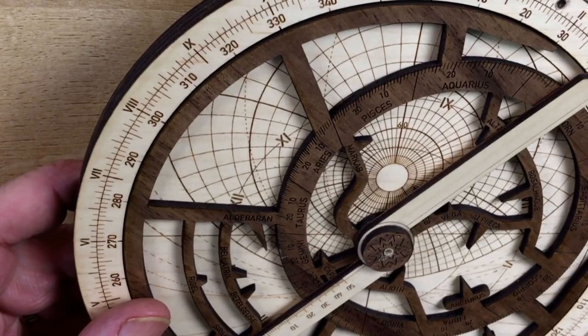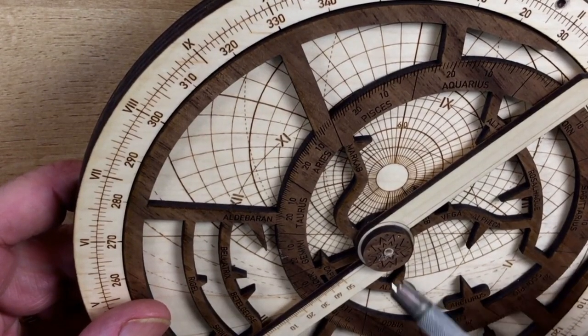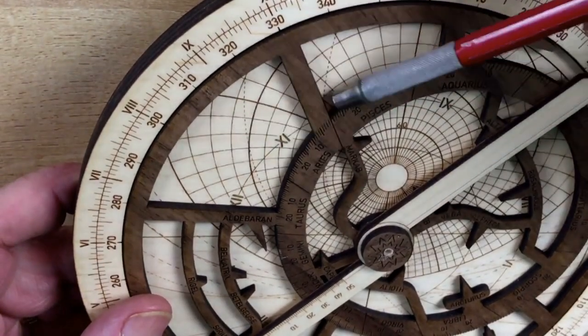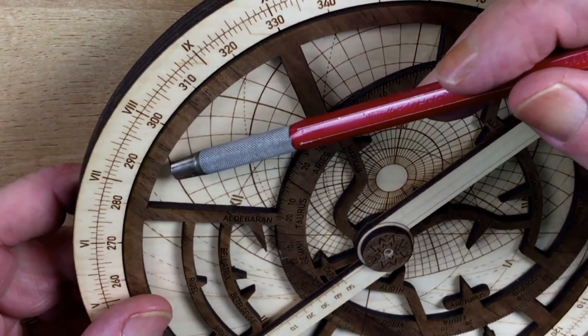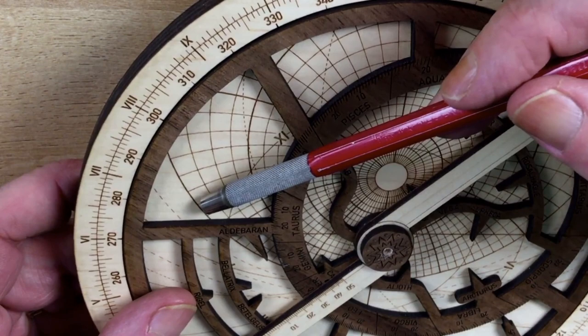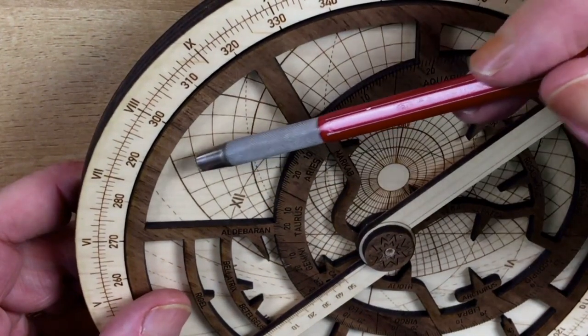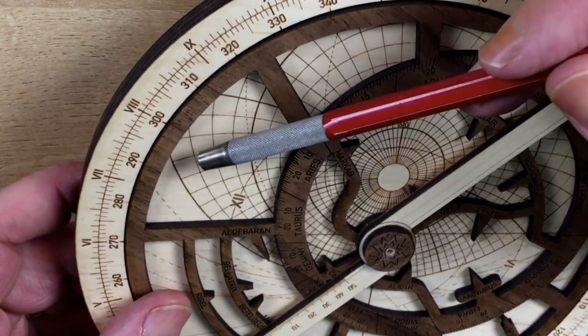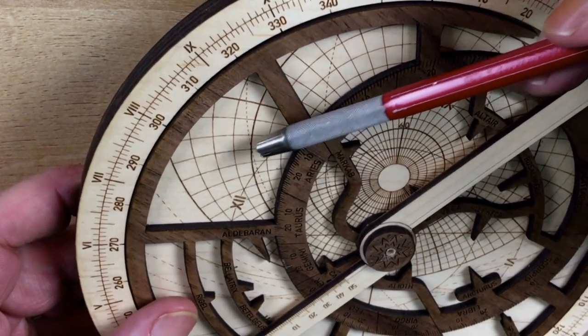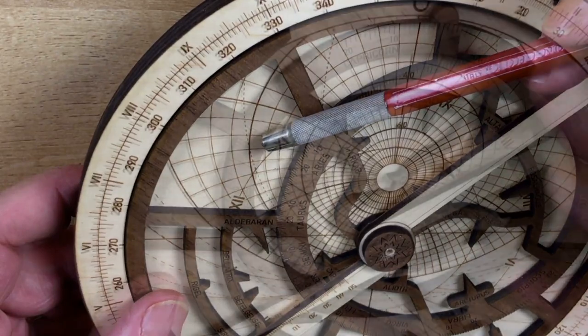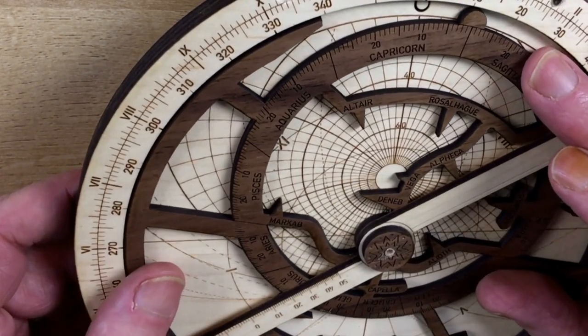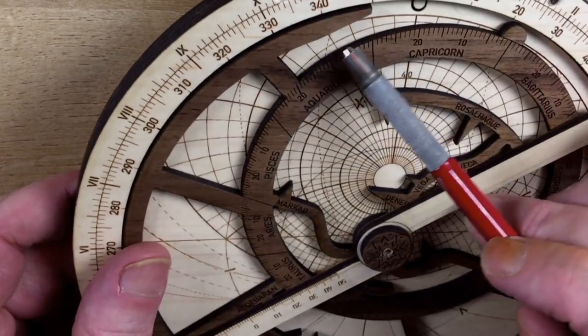Now the next thing that we'll do is we'll turn the astrolabe over onto the side that has the ret on it. Now here you'll see a series of grids. This lower grid is dawn, that is the horizon line. Now each of these demarcations coming up are 5 degrees. So that's 5, 10, 15, 20, 25 degrees. What we're going to do is we're going to line up the 7th of Aquarius with the 25 degree marker.